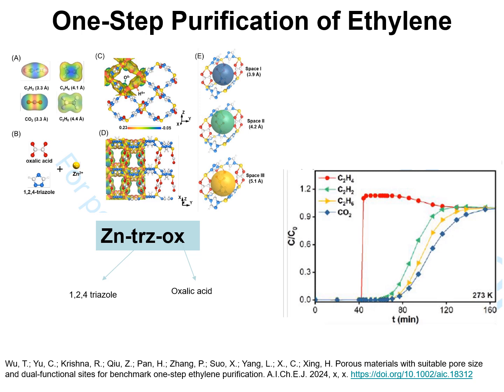The ethylene feedstocks to polymerization reactors require a purity in excess of 99.95%. Additionally, impurities such as acetylene need to be lower than about 40 ppm.